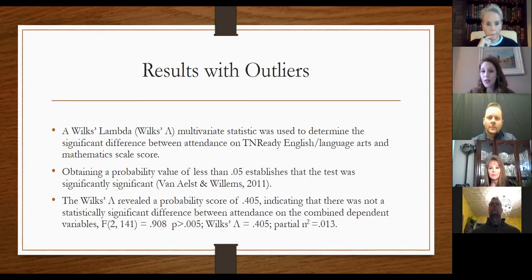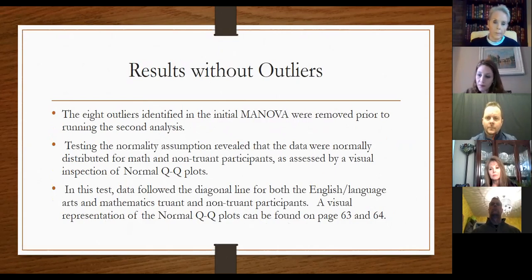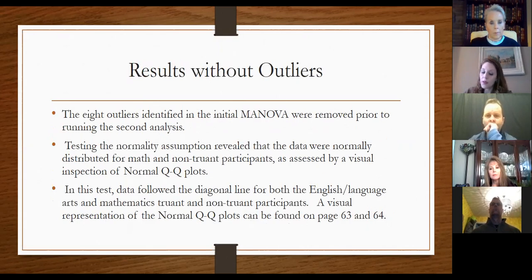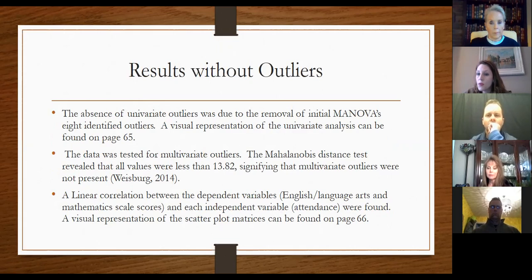After running that, the same MANOVA test was run one more time, but with the eight outliers removed that were identified from the distance test. Some changes occurred. The first change was on the normal QQ plots — both sets of data now followed the diagonal line, so the data became normally distributed. There were no univariate or multivariate outliers this time, and there was still a linear correlation between the variables.